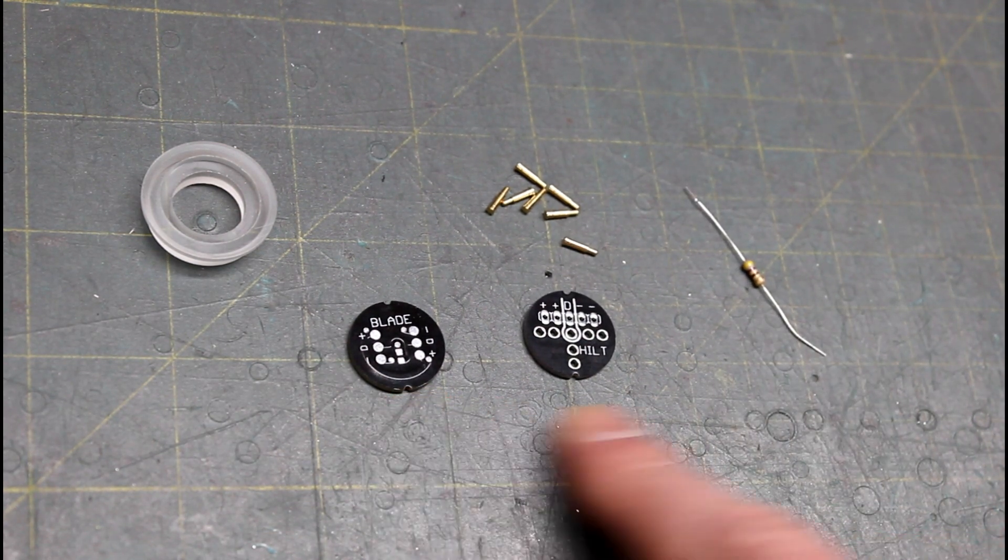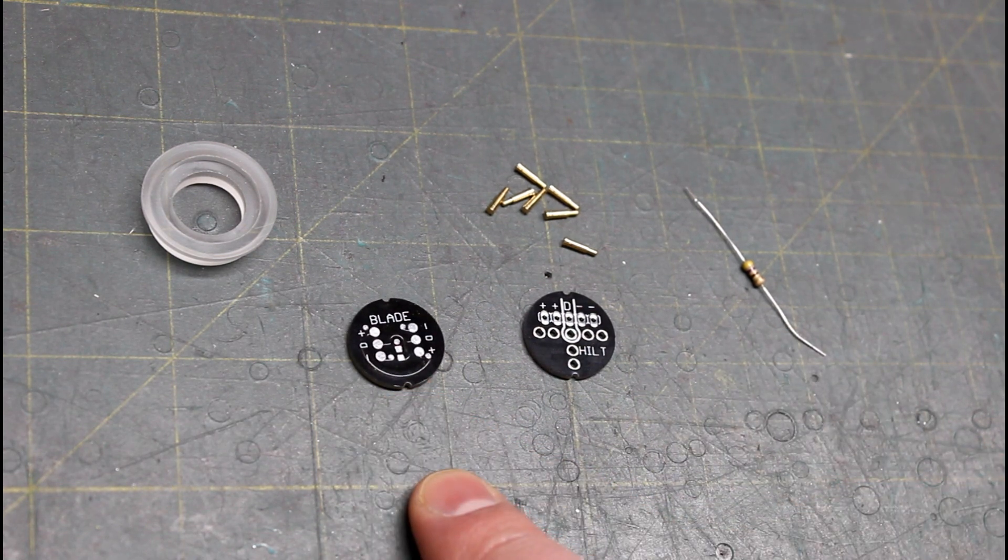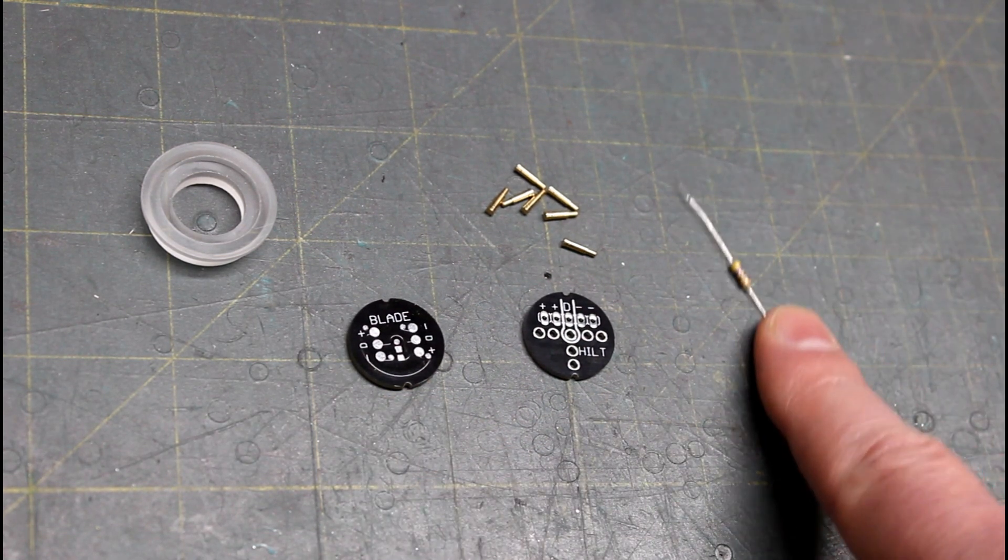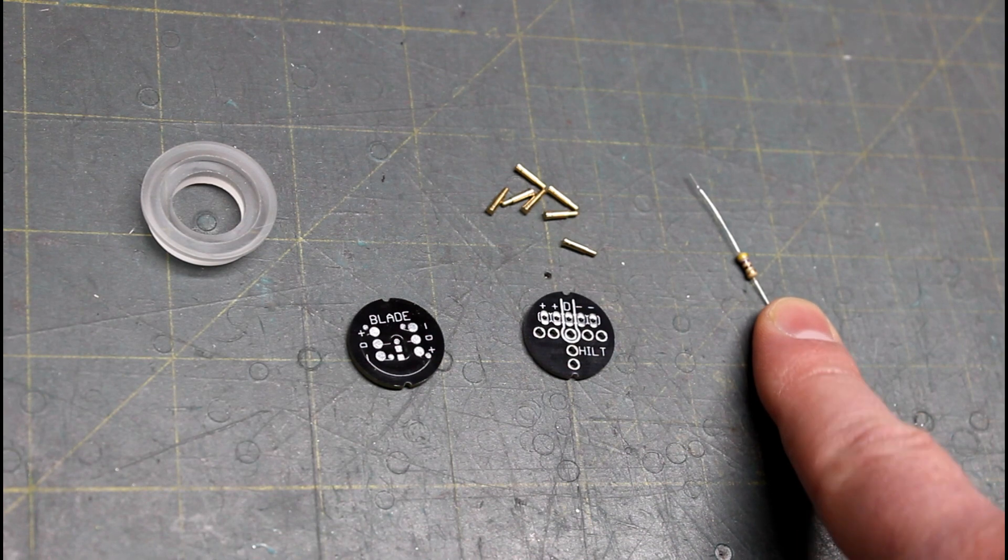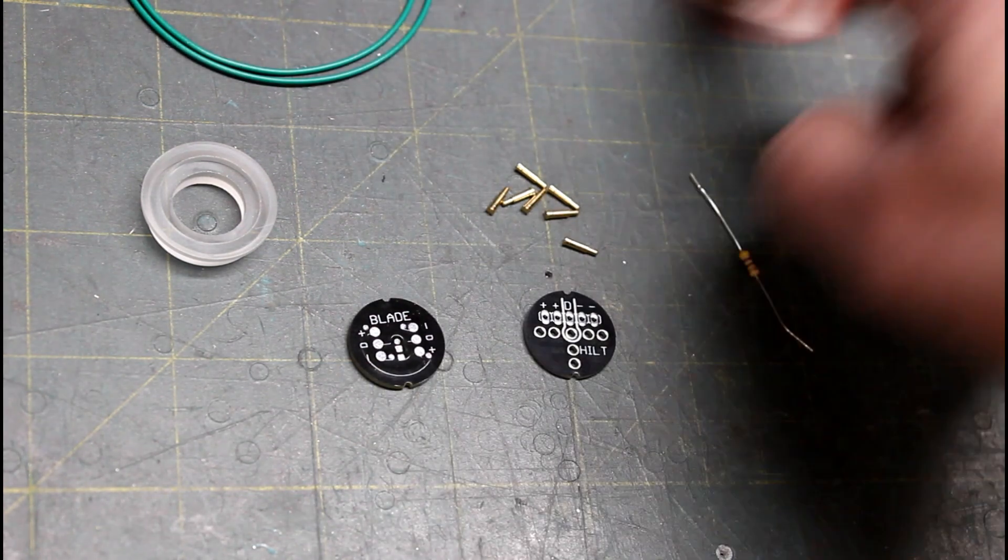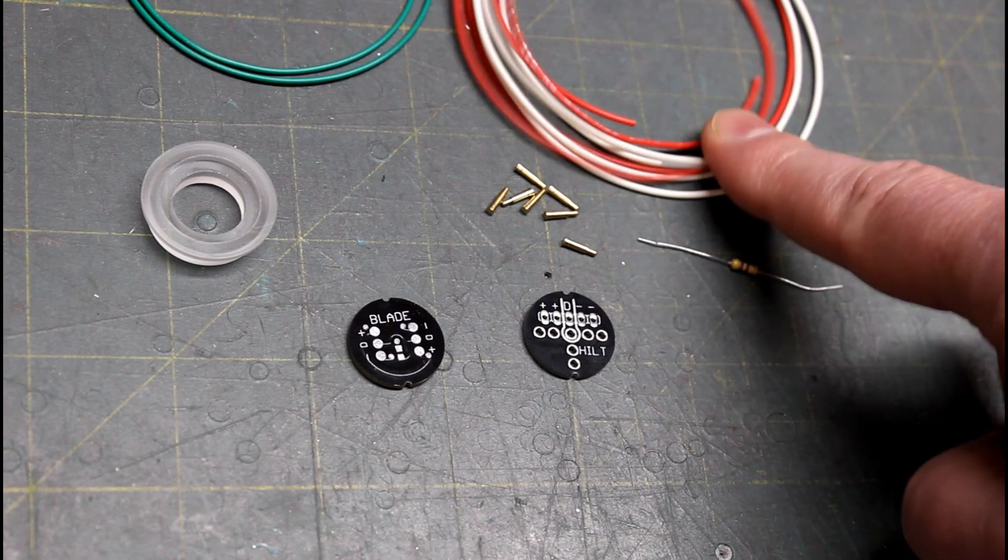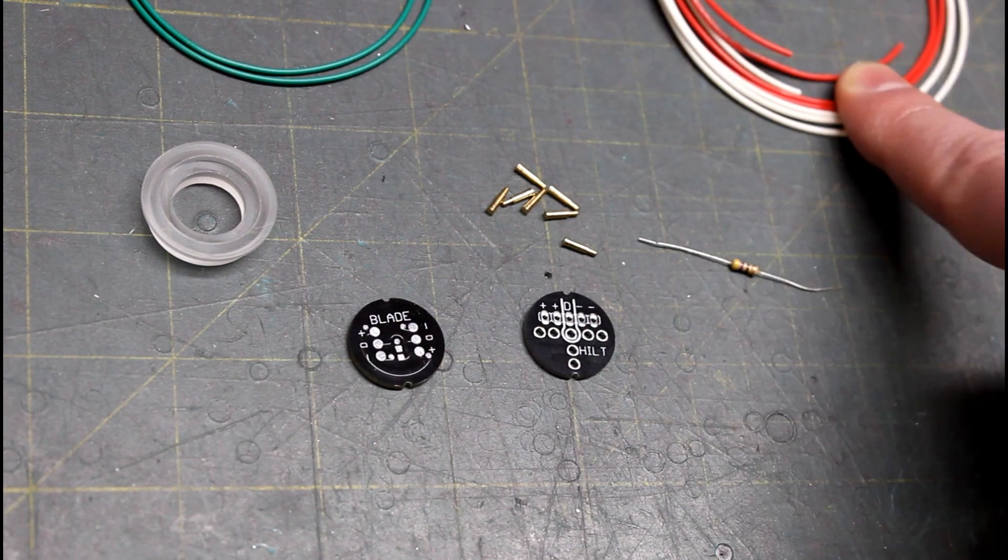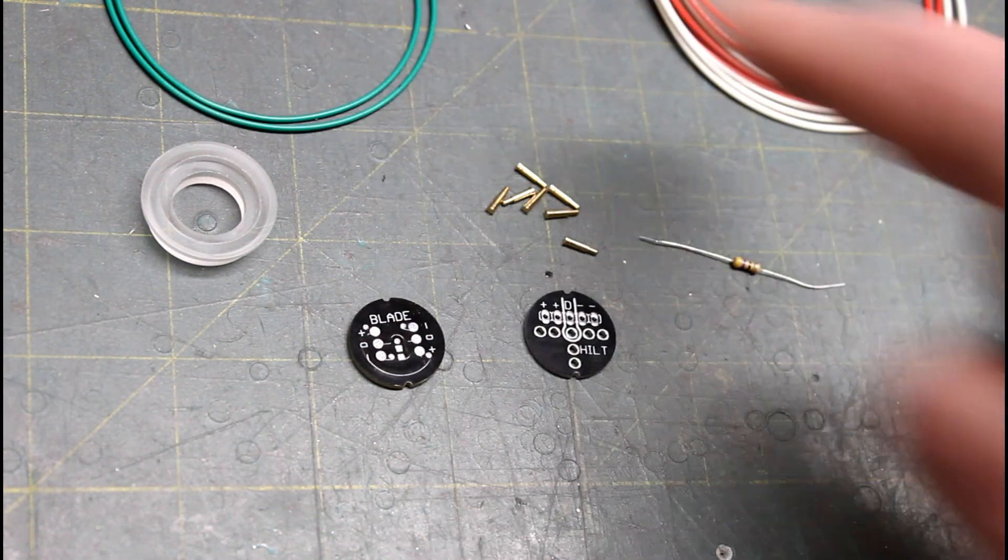You're also going to need a resistor. I'm going to be using an onboard resistor, SMD. You could also use an inline resistor like this. I'll show you how to do either. You're going to need whatever kind of wires you're going to be using. Today I'm using 24 gauge wire for the positive and negative and 28 gauge wire for the data line.